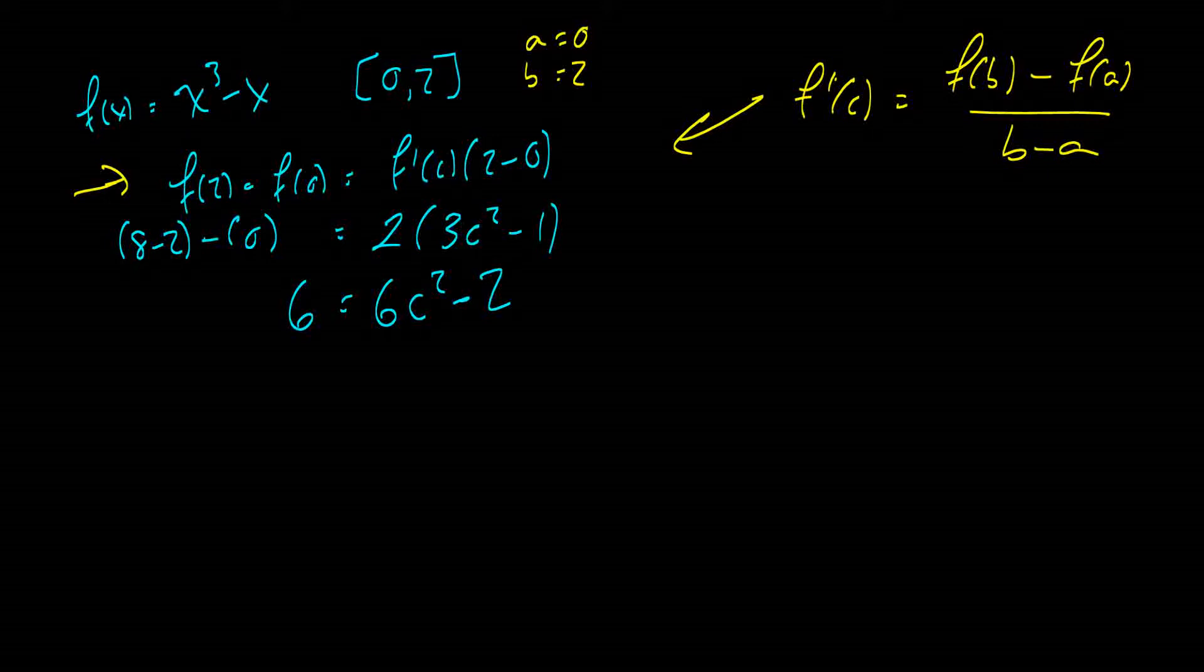So now we're going to solve this question. So we're going to get 8 is equal to 6 c squared. So c is going to be 8 divided by 6. That's 4 thirds. So this is going to be the square root of 4 thirds. And we only want the positive because the positive is in the interval here.